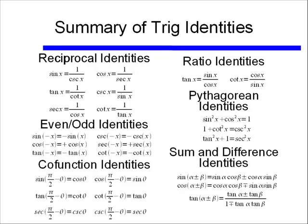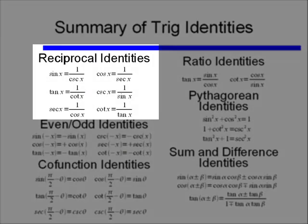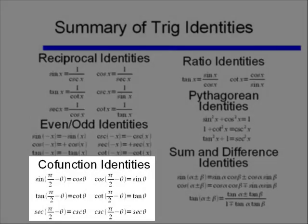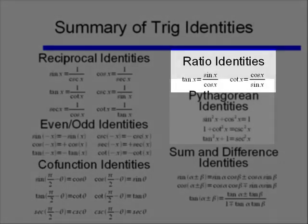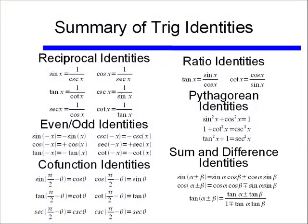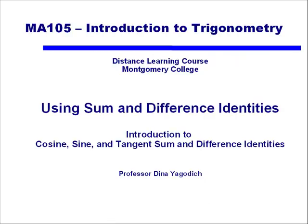And here we have the summary of all our trig identities: our reciprocal identities, our even and odd identities, our co-function identities, our ratio identities, our Pythagorean identities, and lastly our sum and difference identities. Some of these identities I will be giving you on your exam. I'll be sending out an email with your formula sheet so you can know what you expect to have to memorize and what you don't have to memorize for your exams. And there we have an introduction to using the sum and difference identities.